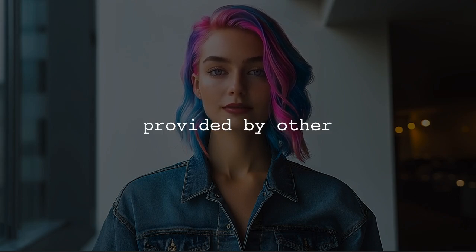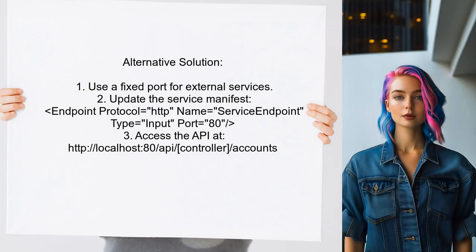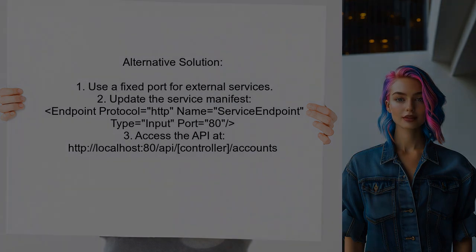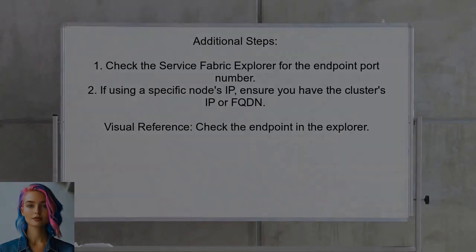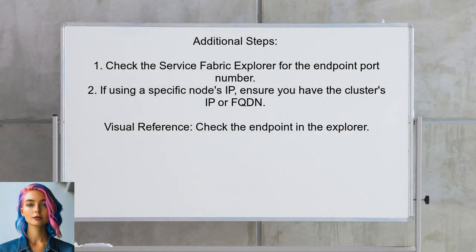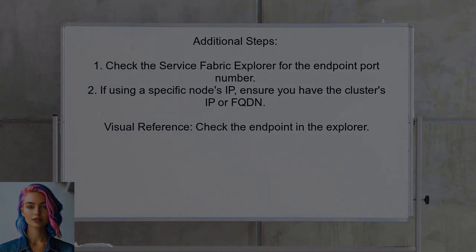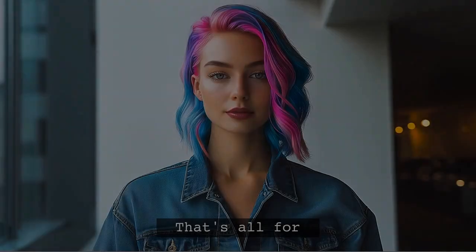Now let's look at the answers provided by other users. This user suggests that your web API is exposed to the outside world and recommends using a fixed port for external services. They explain how to specify a port number in the service manifest file. They also mention that you can find the actual port number in the Service Fabric Explorer. If the endpoint shows a specific node's IP, ensure you have the cluster's IP or FQDN.